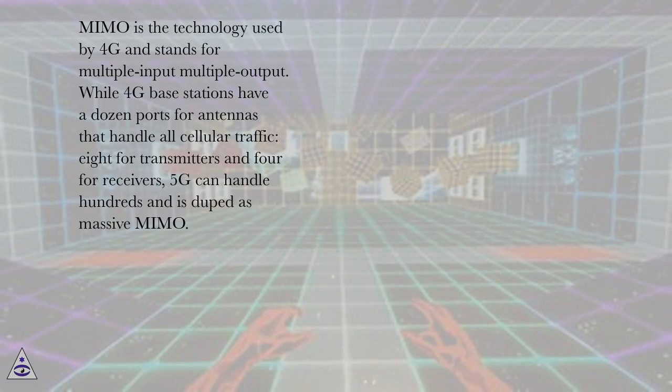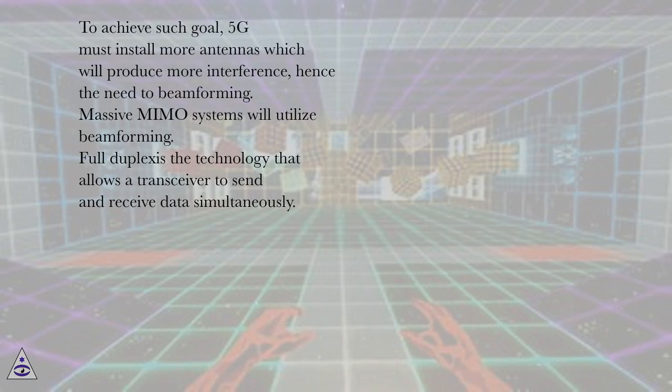MIMO is the technology used by 4G and stands for multiple input multiple output. While 4G-based stations have a dozen ports for antennas that handle all cellular traffic, 8 for transmitters and 4 for receivers, 5G can handle hundreds and is dubbed as massive MIMO. To achieve such goal, 5G must install more antennas which will produce more interference, hence the need for beamforming. Massive MIMO systems will utilize beamforming.